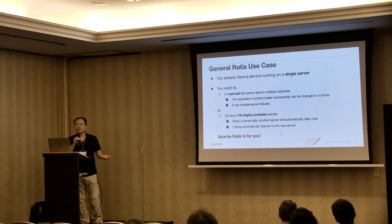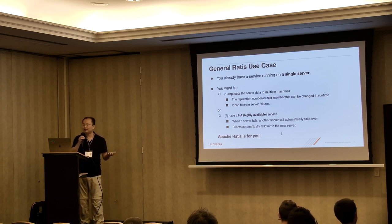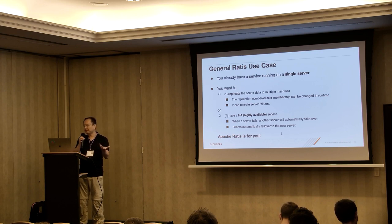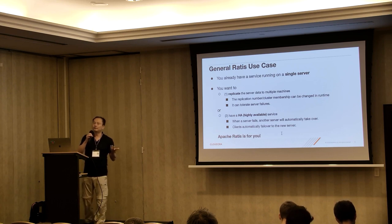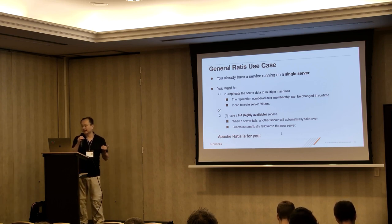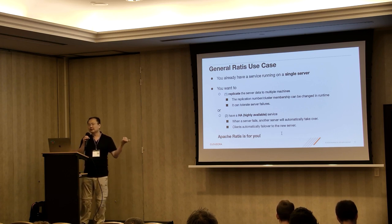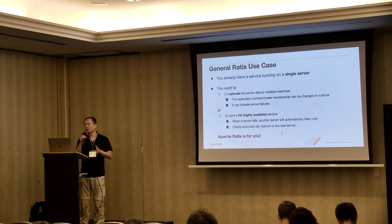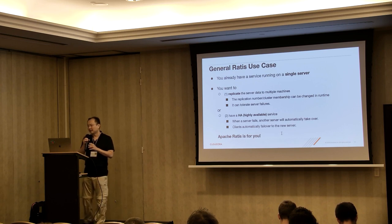What is the general use case for Ratis? When you have a service running on a single server and you want to replicate the server data to multiple machines, and the replication number is something you may want to change, and you also want to tolerate server failure — that's one case. The second use case is HA: when a server fails, another server automatically takes over, and the client can automatically fail over to the other server. If you want features like this, then Ratis is for you.